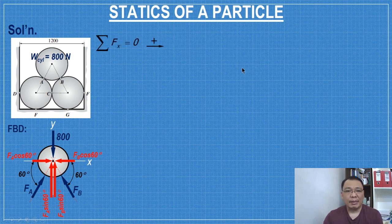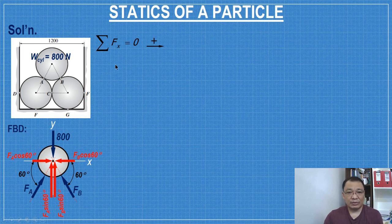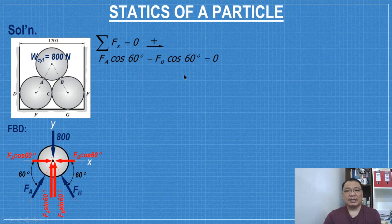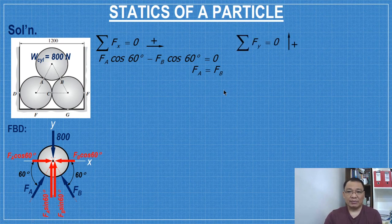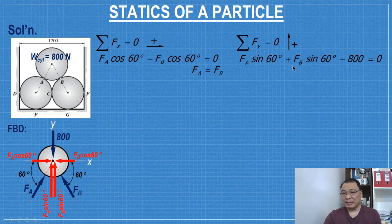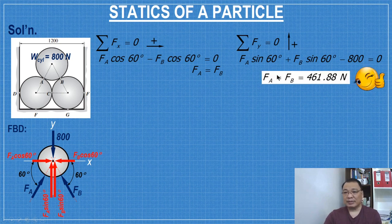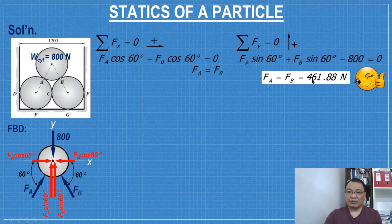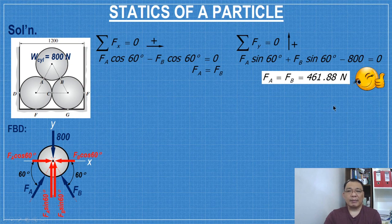We only have two horizontal forces. And as you can see, the cosine 60 will cancel, and therefore FA is equal to FB. And then you sum up for Y. Considering that FA is equal to FB from this equation, you can replace it by a single variable like X if you want, and you can solve. FA equal to FB is equal to 461.88 newtons. So that's the answer of question number one.